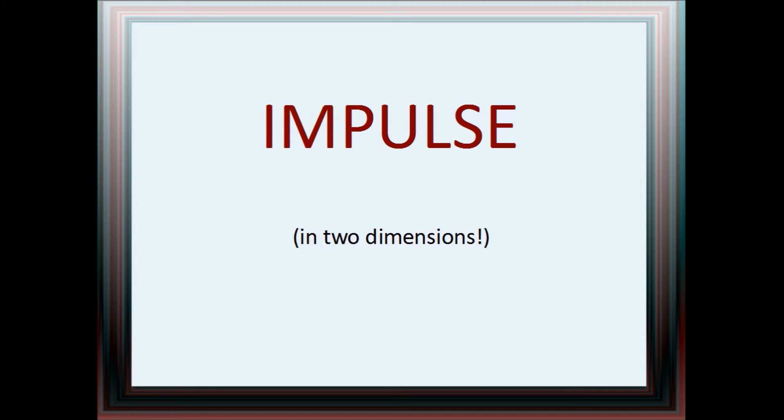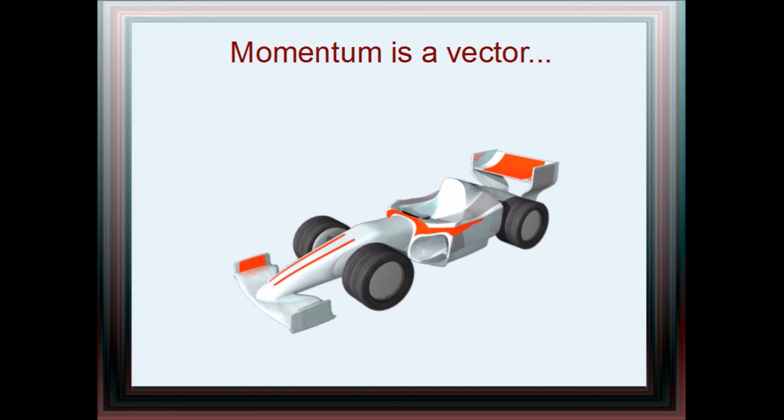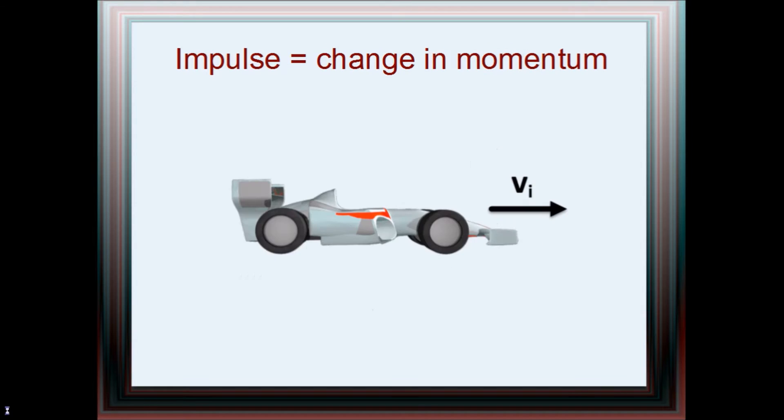Impulse in two dimensions. By now you have seen plenty of situations where something was moving along with a certain momentum. For example, I have this funky race car, and if I drive very fast in it, I will have a large momentum. You should be aware that momentum is a vector, which means its direction matters. Now, an impulse is a change in momentum.